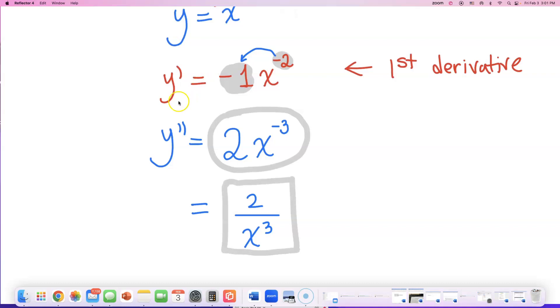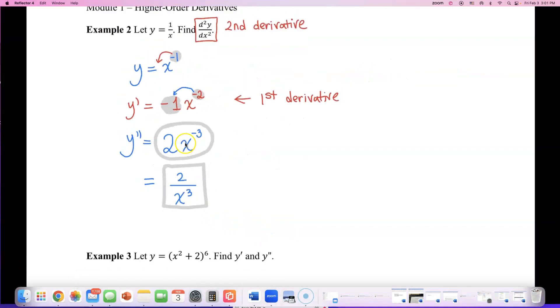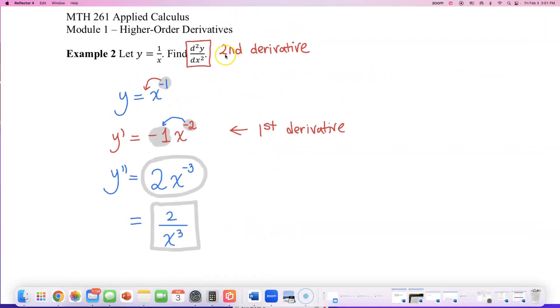But when we have that second derivative, that's where we can stop. So sometimes they'll ask you to find like the third or fourth derivative. Then you just have to continue finding y double prime, y triple prime, and so on and on.